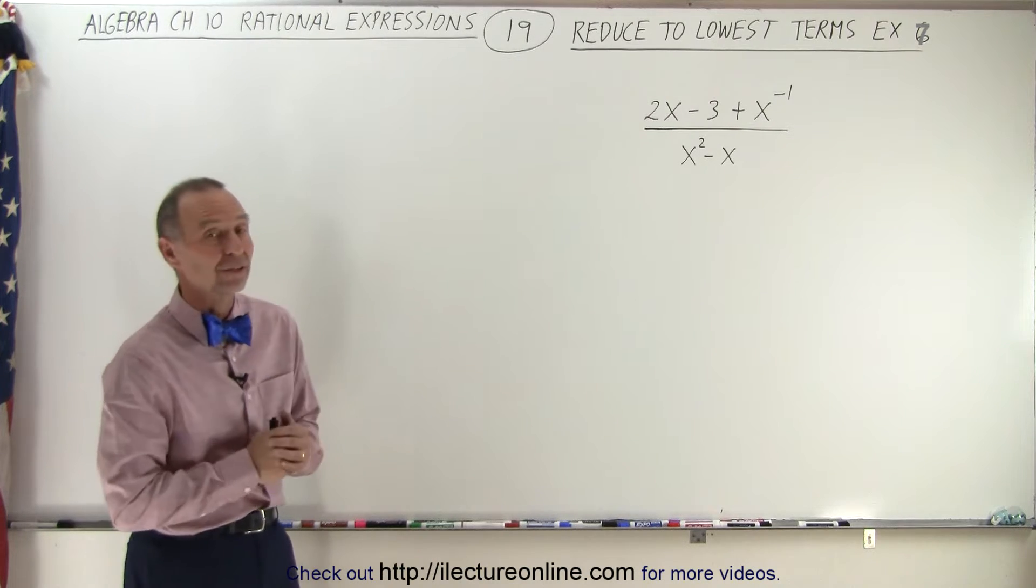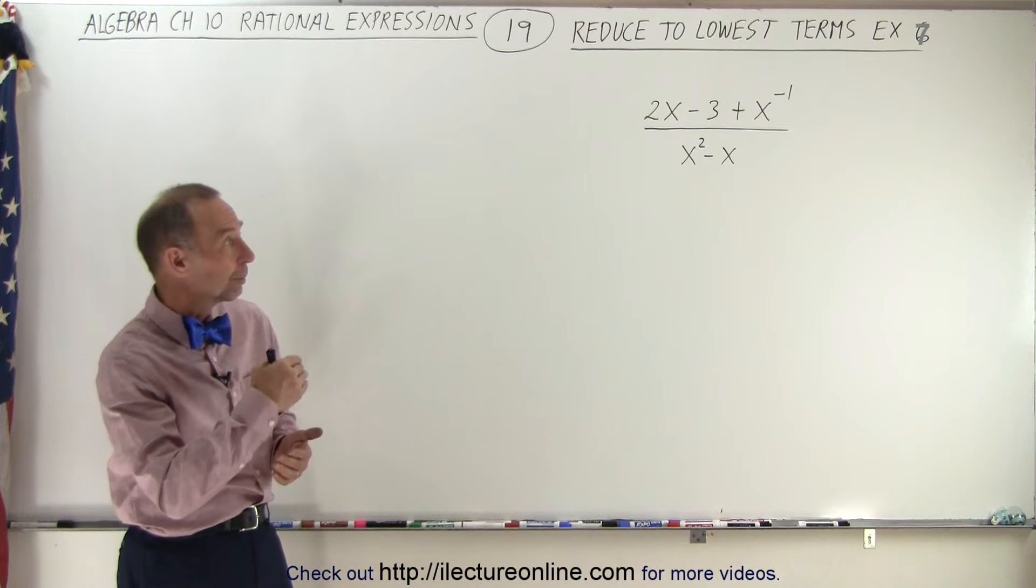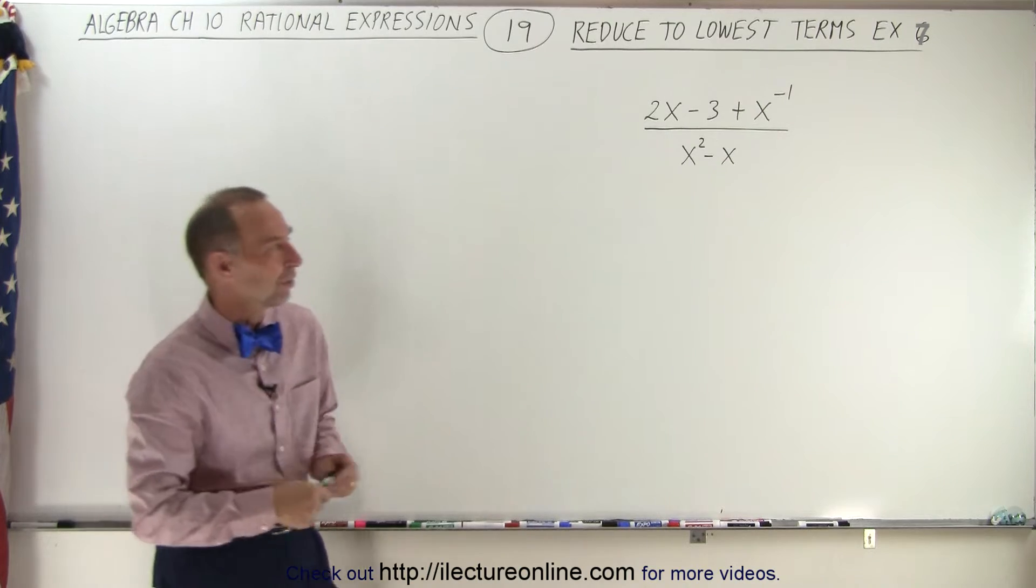Again, we notice a single negative exponent, it's x to the minus 1, so the technique would be to multiply both the numerator and the denominator times x to the plus 1.